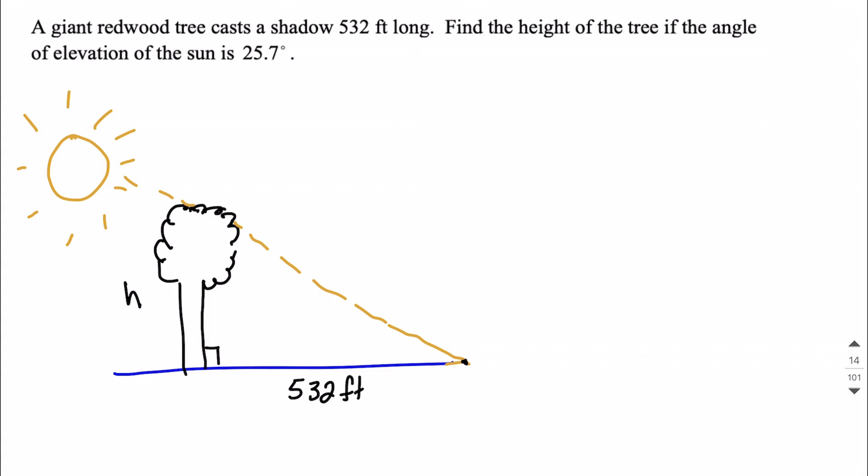And from there, we are also given this angle. We're given that this angle here, the angle of elevation to the sun is 25.7 degrees. So we want to make sure we get that in the correct corner of our triangle as we're setting this up.